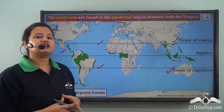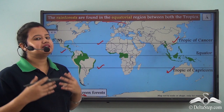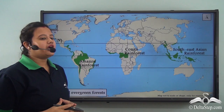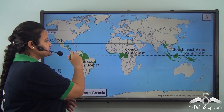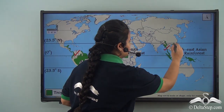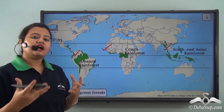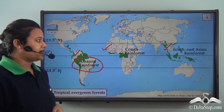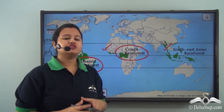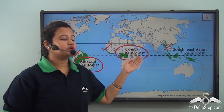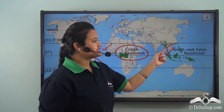Another name for equatorial rainforest is tropical evergreen forest. This is because, as we can see in this map, the rainforests exist between both the tropics in the tropical belt. As we can see, the rainforests exist across three main continents — South America, Africa, and Asia. They are known as Amazon rainforests in South America, Congo rainforests in Africa, and Southeast Asian rainforests in the island countries of Southeast Asia.